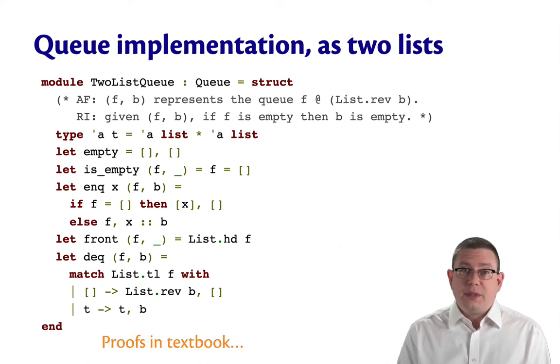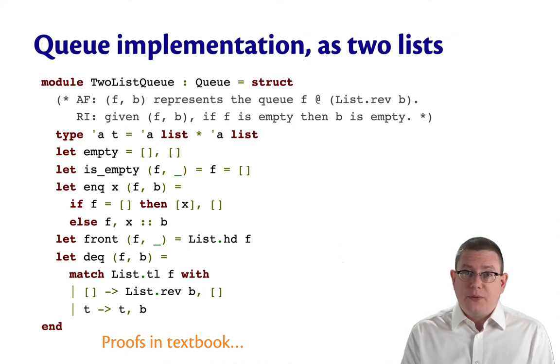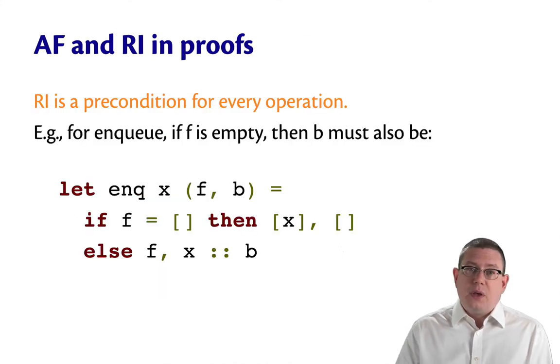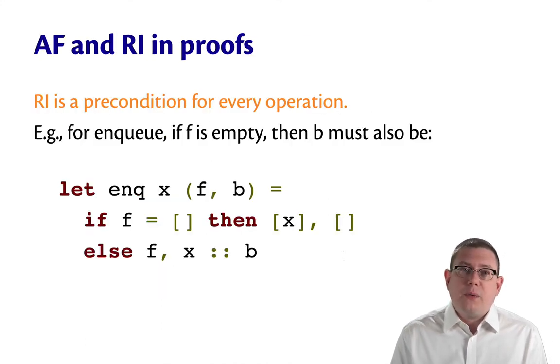Now, the proofs for these are not straightforward. They actually require a considerable amount of work, and I've put them all in the textbook for you to read. The interesting thing I want to talk about now with those is the abstraction function and the representation invariant. The rep invariant, you should recall, is a precondition for every operation of a data abstraction, which is to say, we get to assume that it holds for any queue that's passed in to, say, enqueue.